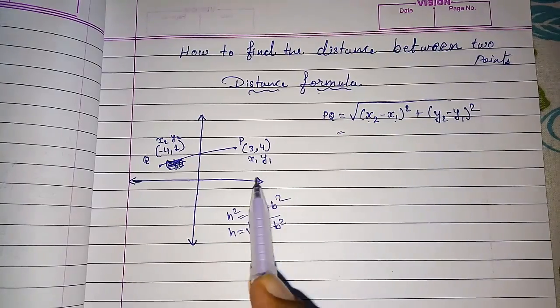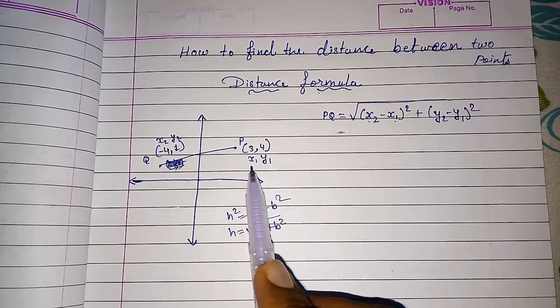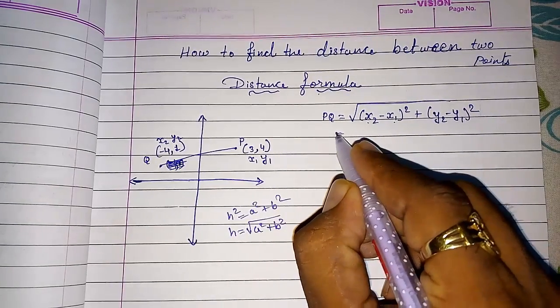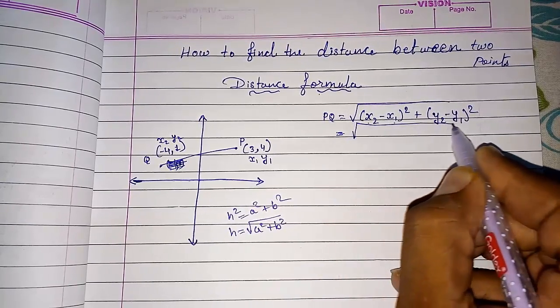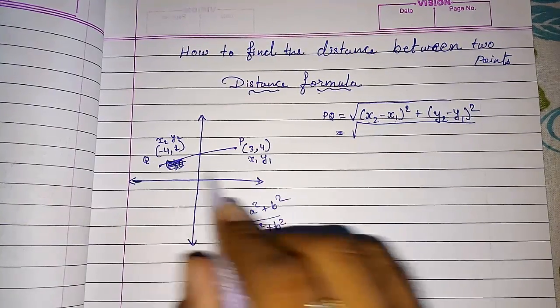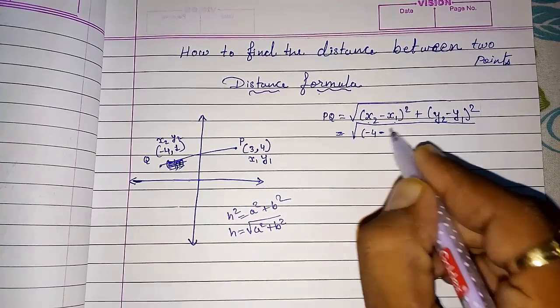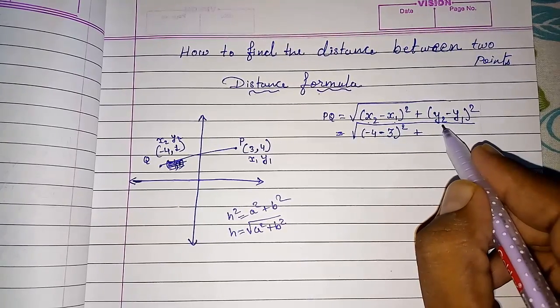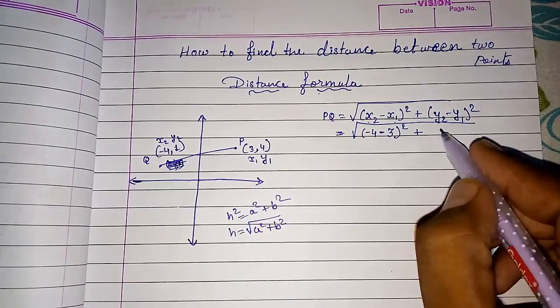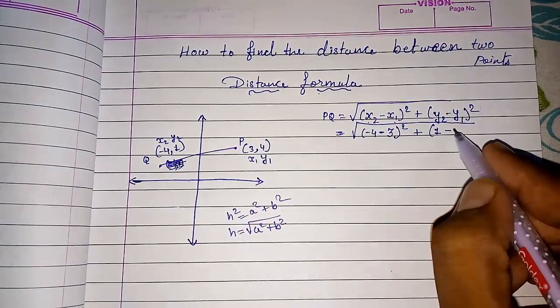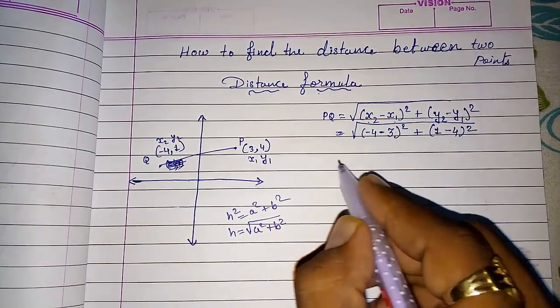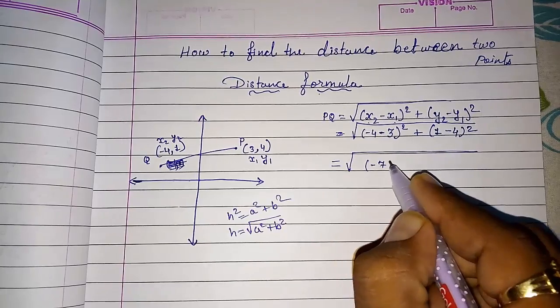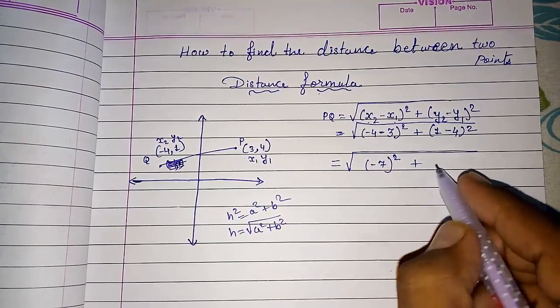Now generally students are asking the same question: if we take by mistake X2 and Y2 here, then what will happen? Then nothing will happen. Don't worry about it. Now directly we will put the values under root. X2 is -4 minus X1 which is 3, whole square, plus Y2 that is 1 minus Y1 that is 4, whole square. So it's √[(-4-3)² + (1-4)²], which equals √[(-7)² + (-3)²].